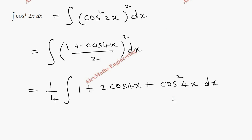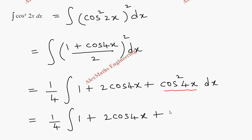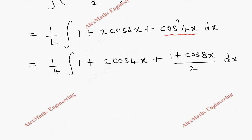Now we apply a separate formula for cos²4x. The rest of the terms are written as they are: 1 + 2cos4x. For cos²4x we substitute (1 + cos8x) / 2, giving (1/4) integral of (1 + 2cos4x + 1/2 + cos8x/2) dx.